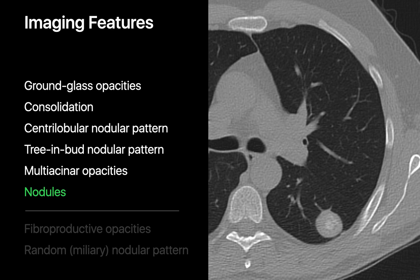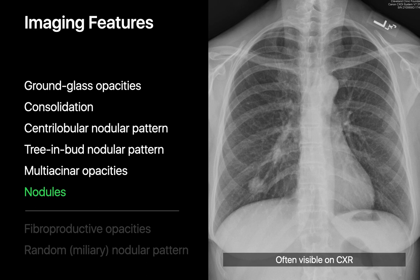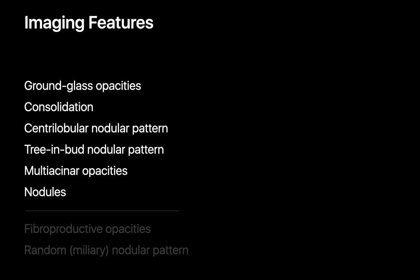Finally, we look for nodules. Nodules appearing in the setting of lung infections can sometimes cavitate and are often visible on chest radiography, though they're not specific for lung infection alone. Although most of these six imaging features are not entirely specific for lung infection, specificity improves if multiple features are simultaneously present, if findings contradictory to lung infection are absent, and if the patient's presentation contradicts non-infectious differential diagnoses.